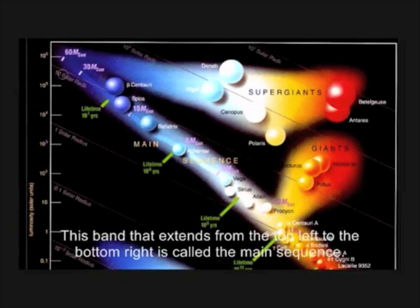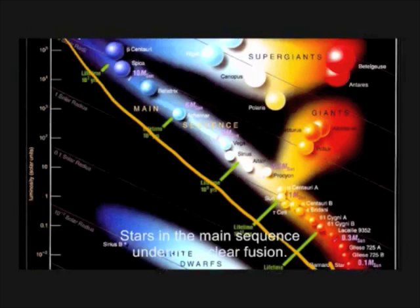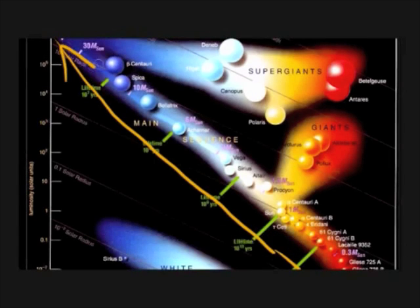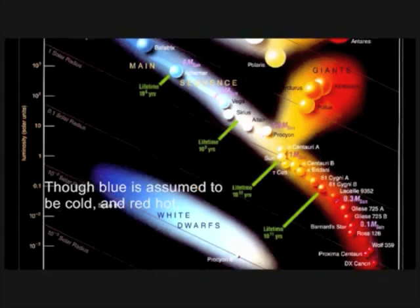This band that extends from the top left to the bottom right is called the main sequence. Stars in the main sequence undergo nuclear fusion, and nuclear fusion is basically the changing of hydrogen to helium.